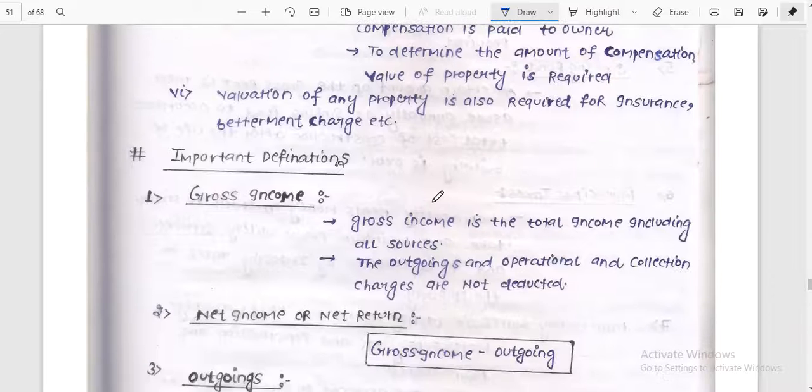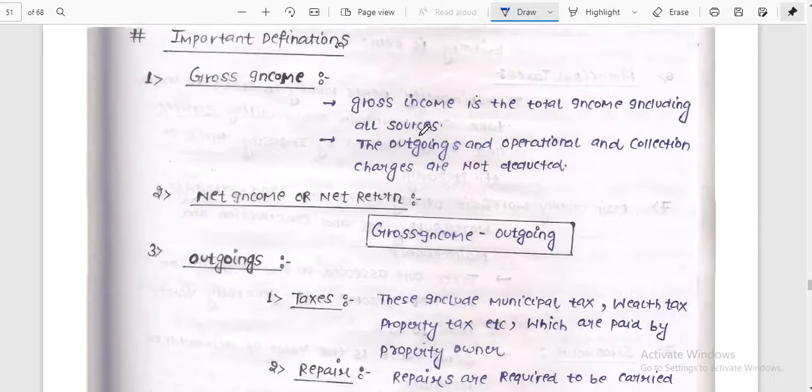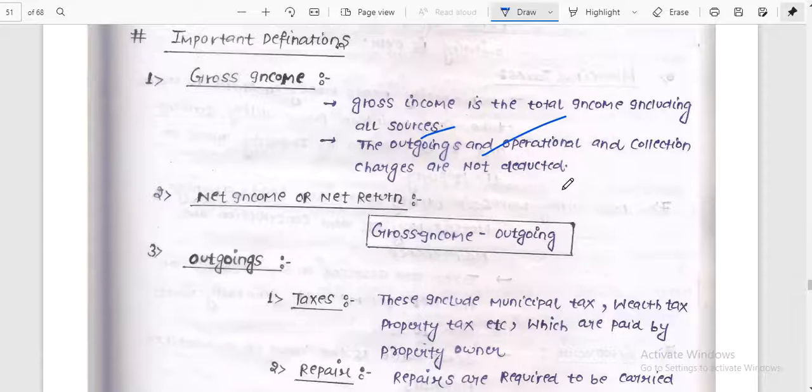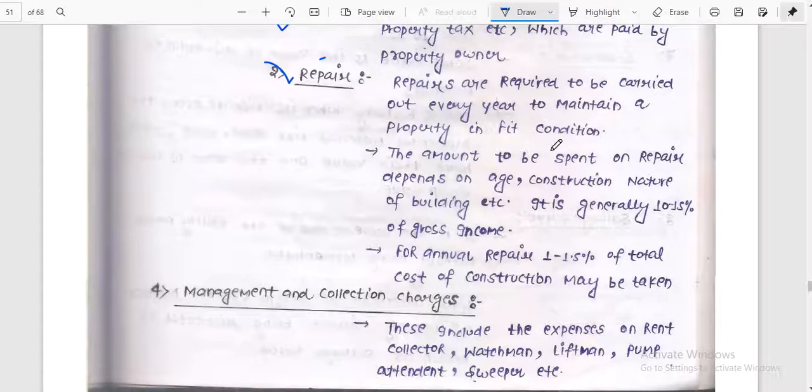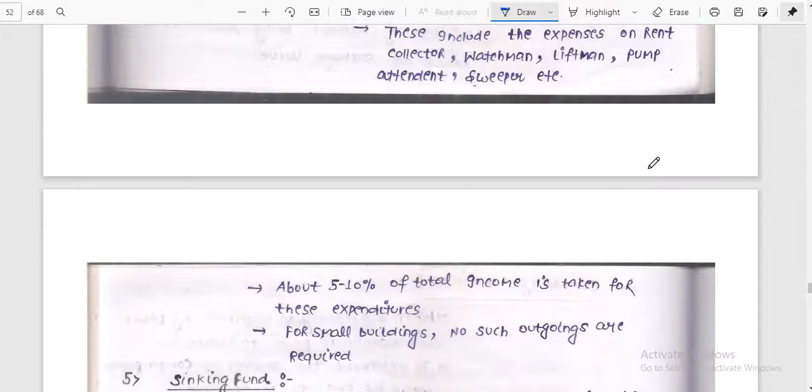Important definitions. Gross income is the total income including also the outgoing. Outgoings like insurance, taxes, recurring taxes, then management and collection charges. They include expenses of rent collectors, watchmen, and various other charges, which may be 5 to 10 percent.